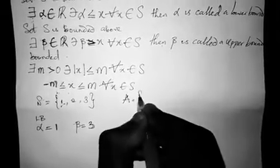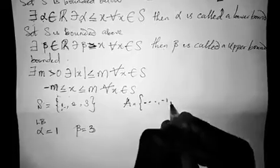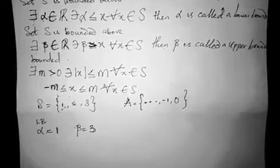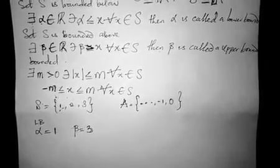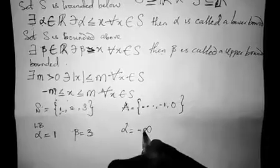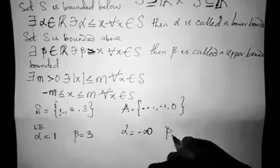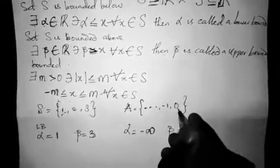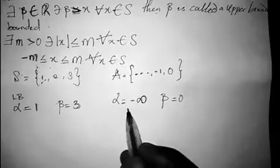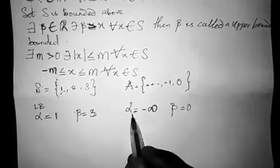Let's say we have another set A equal to {..., -1, 0}. Is set A bounded? Set A is bounded above but not bounded below. The alpha of the set is minus infinity because it does not have a starting point, and the upper bound beta is 0. So we say this set is only bounded above and not bounded below, and therefore the set is not bounded.